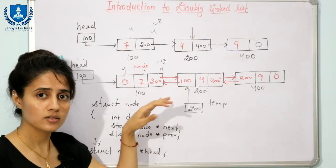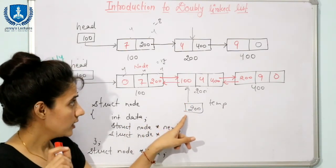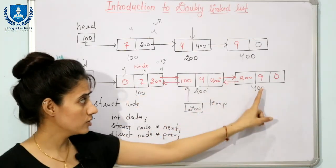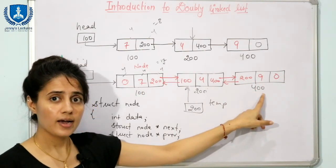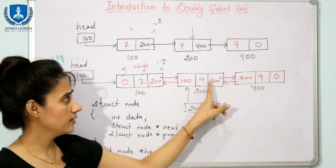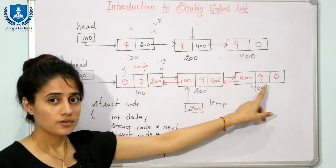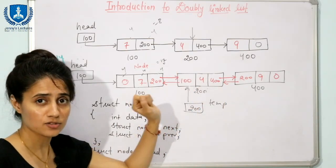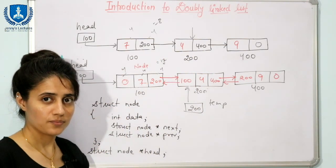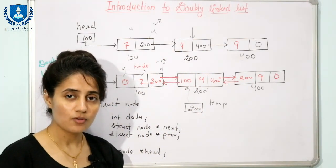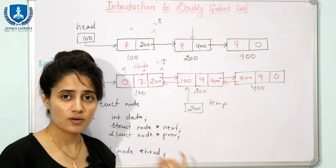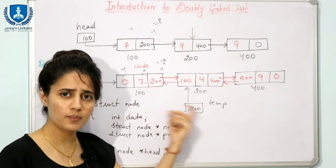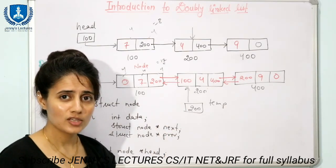Despite the extra memory requirement compared to a singly linked list, the many advantages of a doubly linked list justify its use. One more advantage is printing the list in reverse direction: you traverse to the last node, then from there you can print backwards because of the previous links — something not possible with a singly linked list. In the next lecture, we will implement a doubly linked list — insertion, deletion, and traversal operations. See you in the next video!